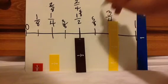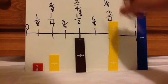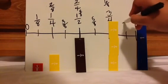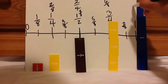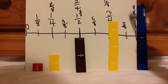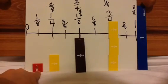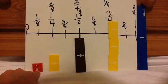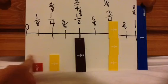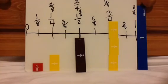Continuing: 5 eighths, 6 eighths which is equivalent to 3 fourths, 7 eighths, and 8 eighths which is equivalent to 1 whole. So when someone says 1 eighth, it's close to 0, but it's also close to 1 fourth. You have a general idea of where it could be.